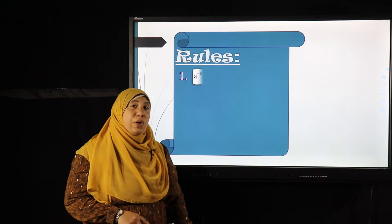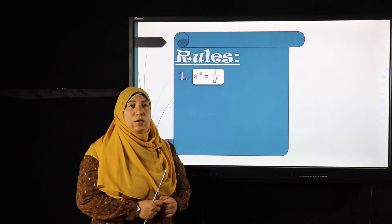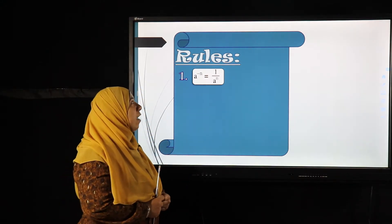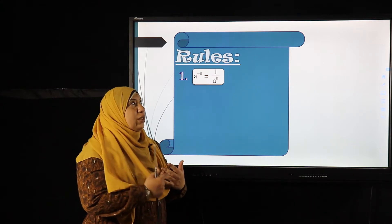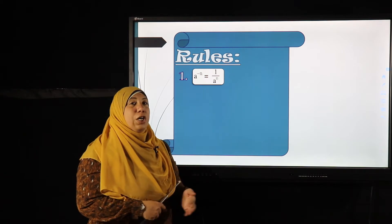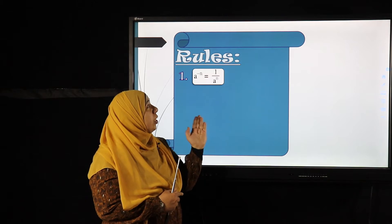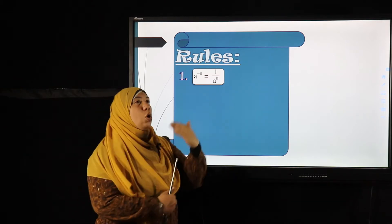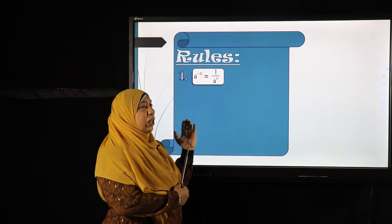If my power is negative — where a is any number and n is any number — if I have a number raised to a negative power, I will take the multiplicative inverse of the number, or the reciprocal. So a to a power becomes one over a, and this changes the power from negative to positive.